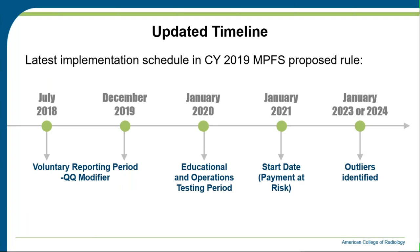To bring all this together with the updated timeline: we're currently in December 2018, in the middle of a voluntary reporting period. Those engaged in AUC can apply a QQ modifier at the claims level. January 1, 2020 is when the educational and operations testing period begins. January 2021 is the start date when payment is at risk. There will be rulemaking processes for 2020 and 2021 as this guidance evolves. 2023 and 2024 will be when outliers are identified.